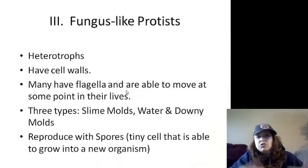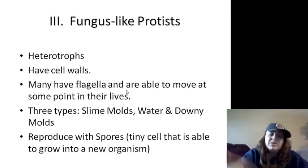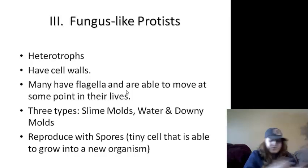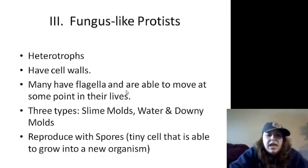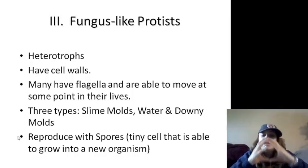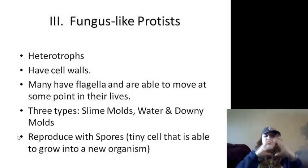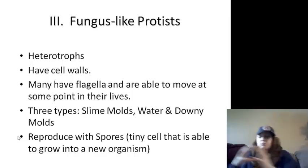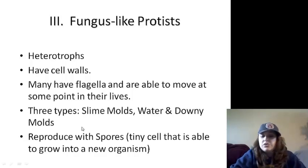Fungus-like protists — this is the new stuff. They are heterotrophs and have cell walls, but remember, they're not like fungus cell walls — that's what makes them different, which is why they're placed in protists rather than fungi. They have a different type of cell wall. Many have flagella and are able to move at some point in their lives. We have slime molds, water molds, and downy molds — three types. They all reproduce by spores, which are tiny cells able to grow into full organisms and can be released and carried to other places.